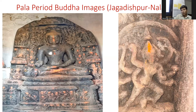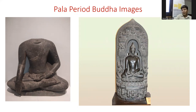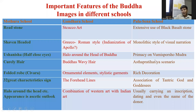This Buddha image is from Jagadishpur, Nalanda. Another Bhumisparsha mudra from the Pala period, and this one is one of the five Dhyani Buddhas of the Pala period. During the Pala period we see: extensive use of black basalt stone, monolithic style of visual narration, primacy of Bhumisparsha mudra, Ashtamahapratiharya scenario, rich decoration, and association of Tantric gods and goddesses. These were the important features of Pala period Buddha images, which are different from Gandhara school and Mathura school Buddha images.